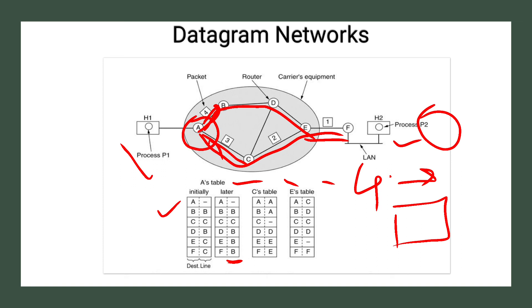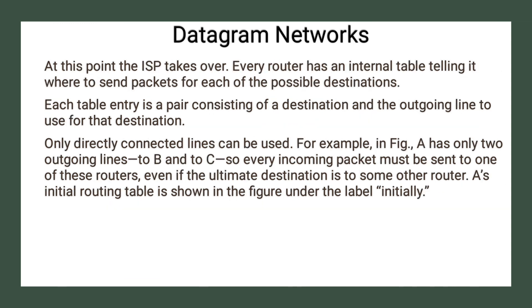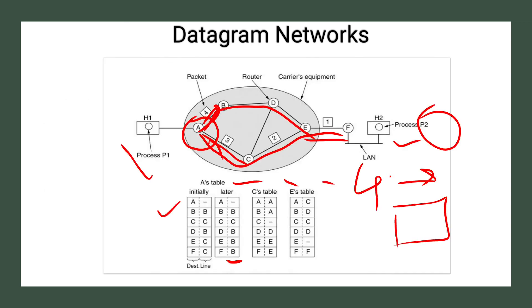So this is how datagram networks work. In a virtual circuit network, packets follow the same path for the entire duration of the connection — there is no change in path. In datagram networks, the route for packets is not fixed and may differ for some packets, for example due to a traffic jam. This is all about datagram networks.